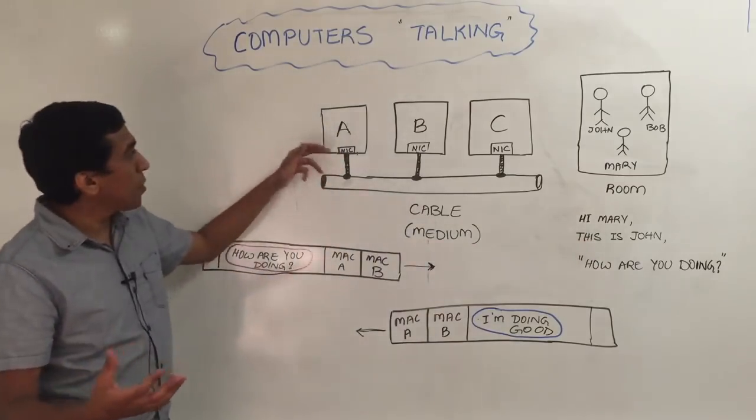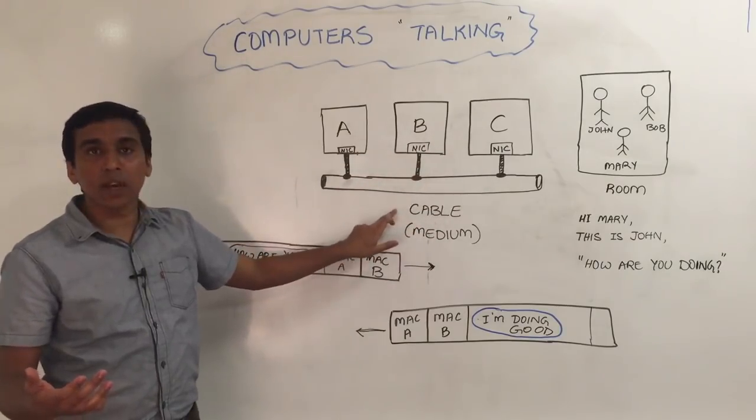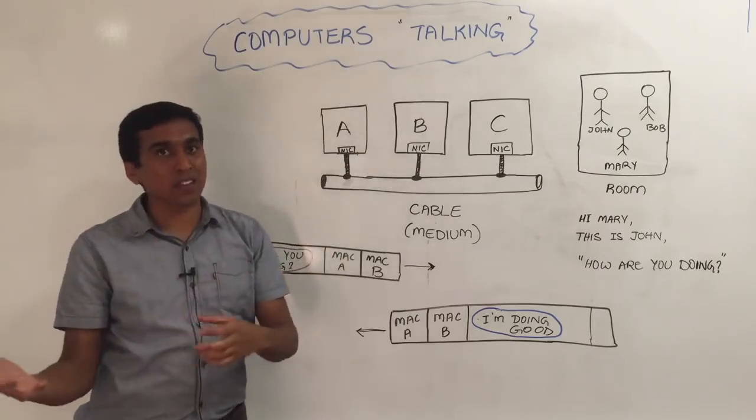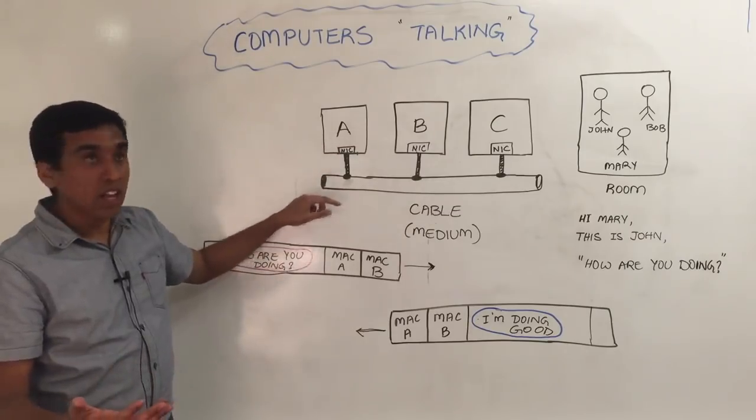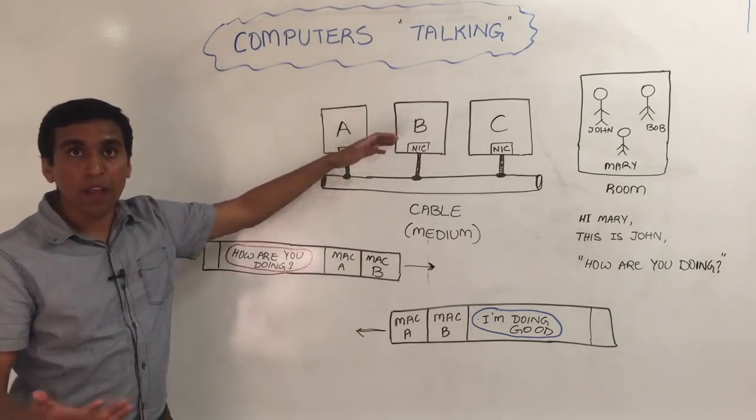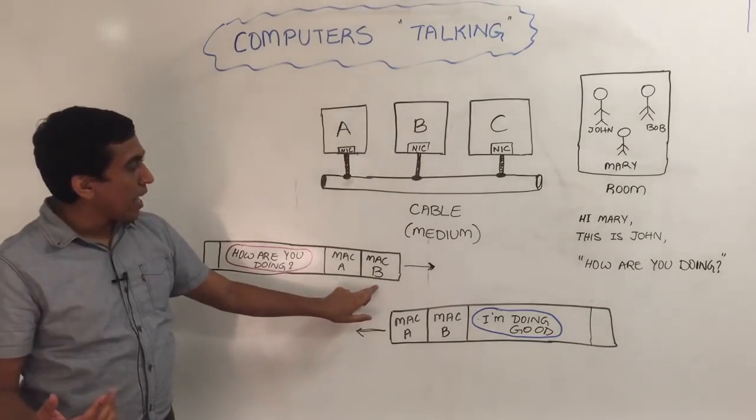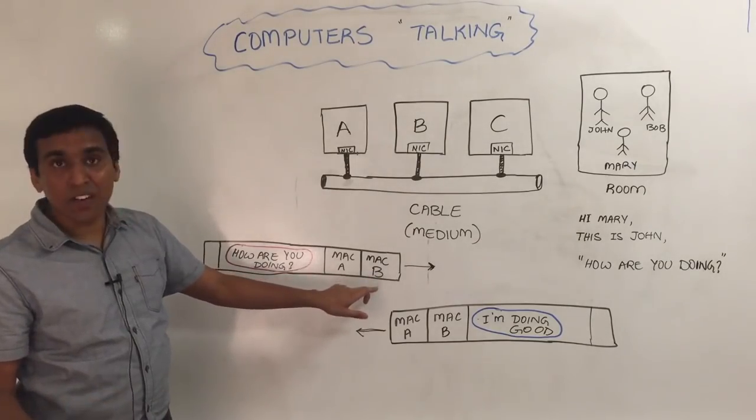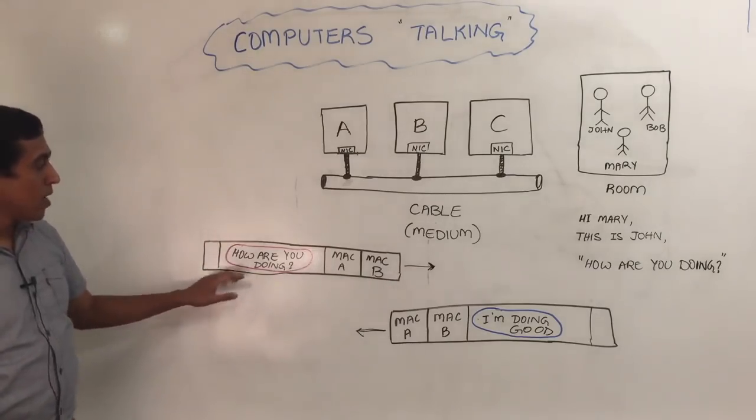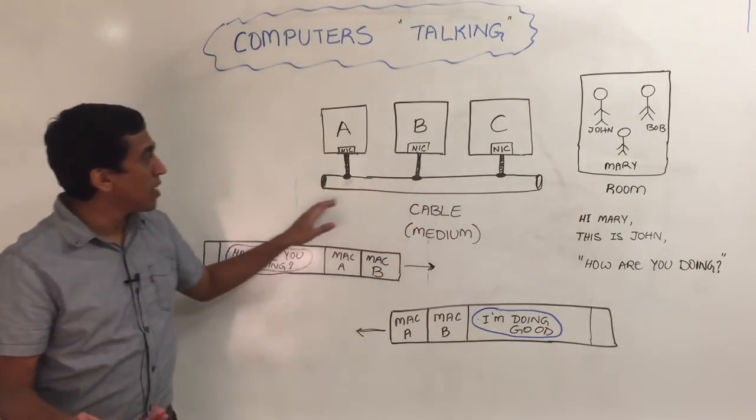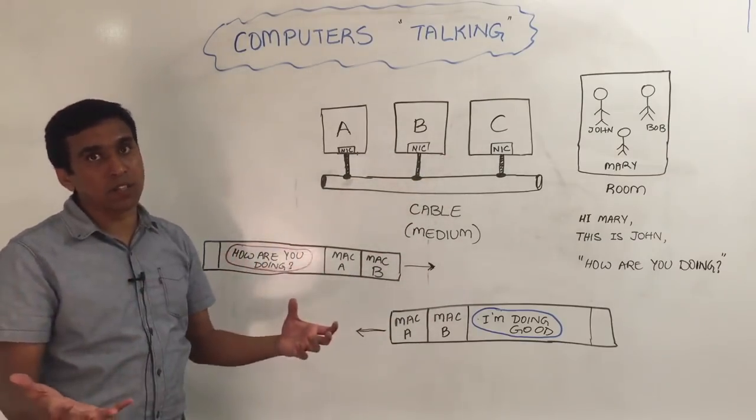In the same way, when computers want to talk, they share a medium. In this example, all these three computers are sharing a cable. This is how networks were built in the past. So you have NIC cards for each of these computers, and they have their own MAC addresses. Now, let's say if A wants to talk to B, what A does is, it sends a message to B, which looks similar to this: Hey B, you use the MAC address to address B. This is A talking, and here is my message. How are you doing? When this message is put on this medium, everybody on this medium can listen to it. So in this case, B and C can listen to this message.